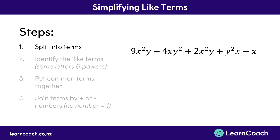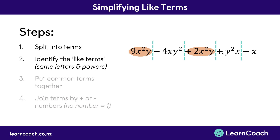Let's look at a slightly bigger example. Step one: split into terms by drawing lines in front of all minuses and pluses. Step two: identify like terms. We start at the beginning — there's an x squared y. We look through: none of the others are x squared y. Next term has an x and a y squared, and another one also has an x and a y squared — in a different order, but as we saw that doesn't matter. These two are like terms because they have the same letters and the same powers. The only one left is just an x, and there are no other terms with just a simple x.